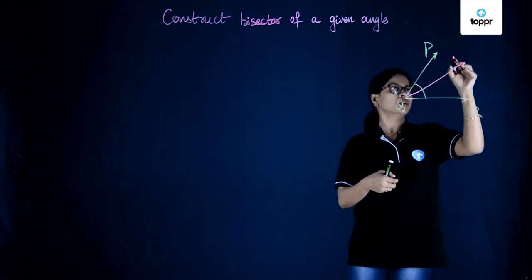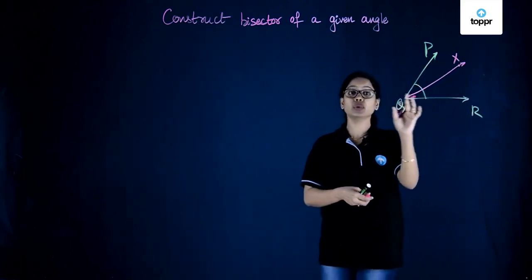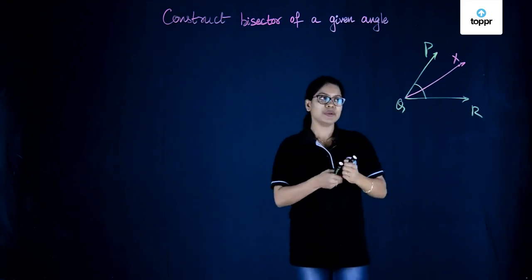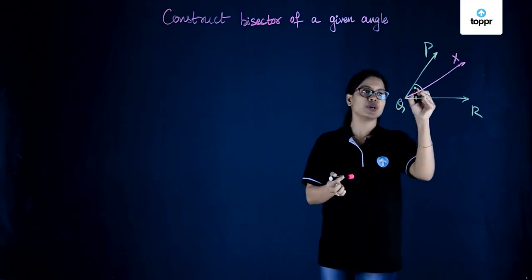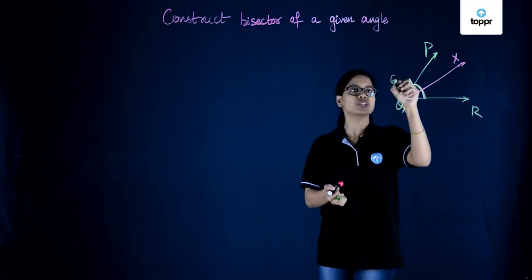QX such that it divides angle Q into two equal halves. That means if the angle Q's measure, if complete angle Q is equal to 60 degrees,